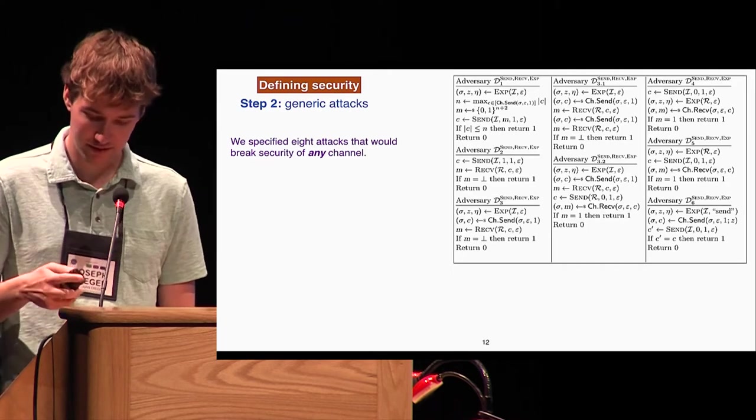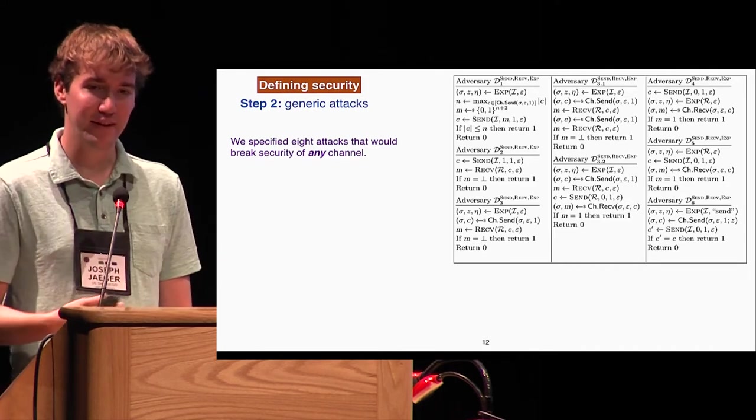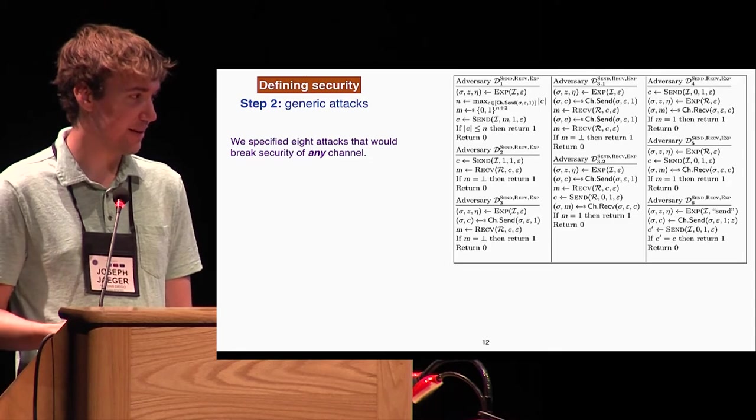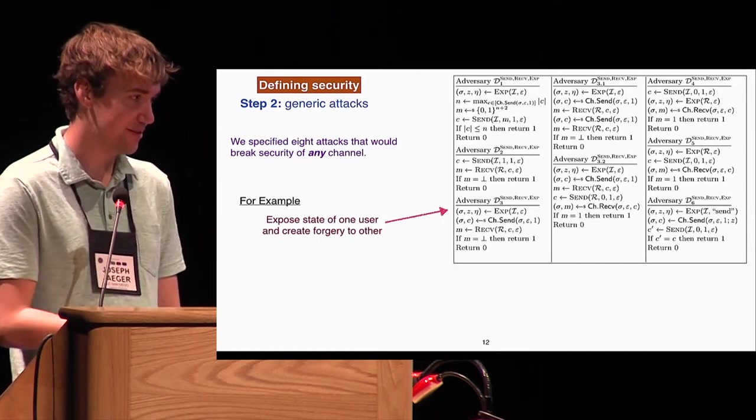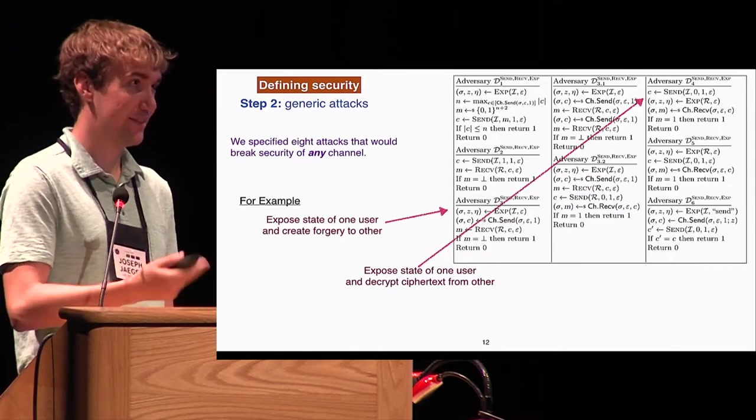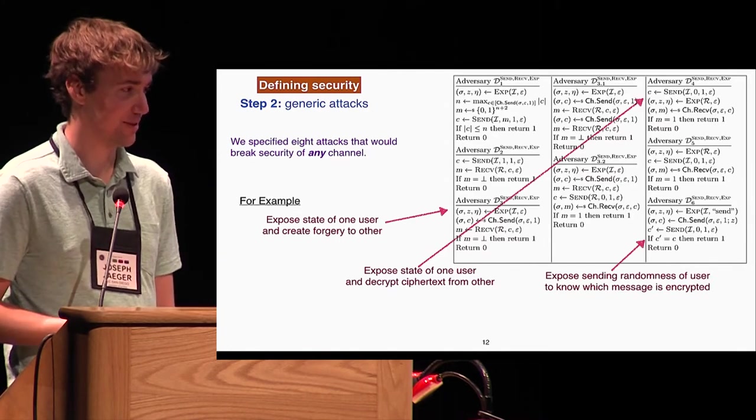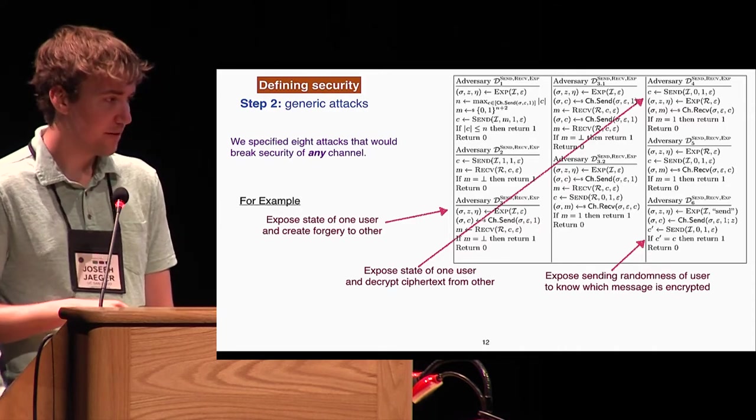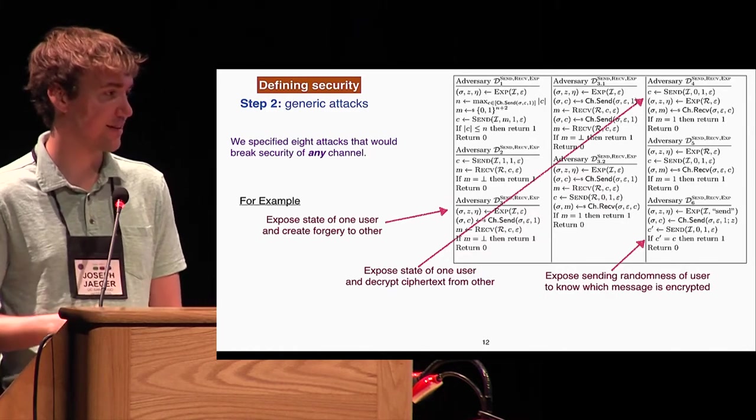The next process in obtaining our final security definition was understanding some generic attacks. In the interface as I just defined it, there are attacks which will breach the security of any channel. So we specified eight different classes of such attacks. Some examples of this include that if I expose the state of one of the users, I'm necessarily able to forge a message to the other user. Given the state of a user, I can necessarily decrypt the next ciphertext it's supposed to receive. A slightly more complicated one: if I expose the sending randomness together with the state of a user, I should be able to decrypt or tell what the next message it sent was.